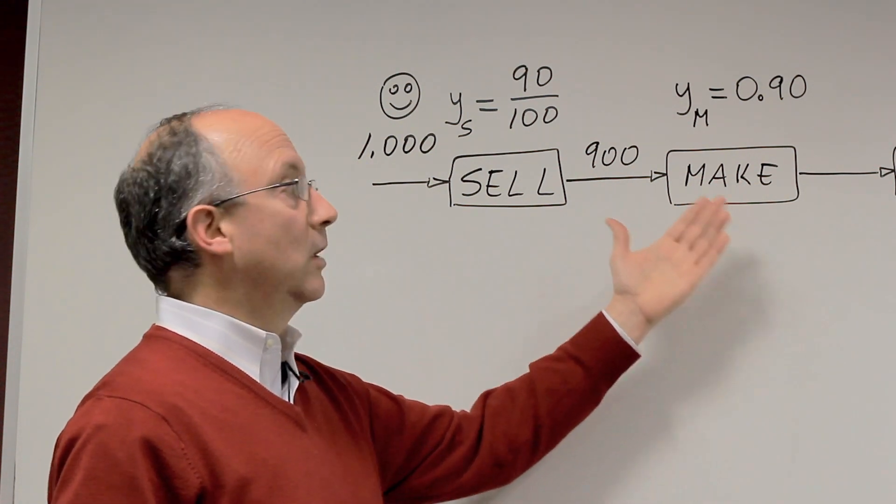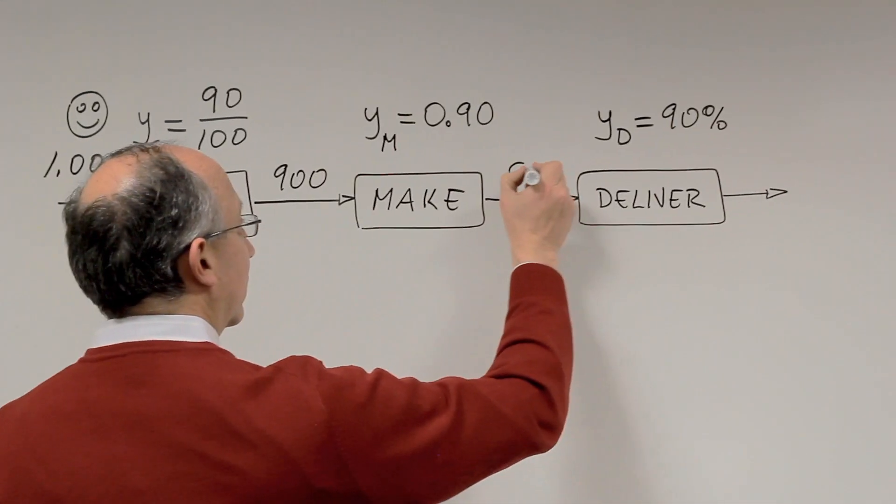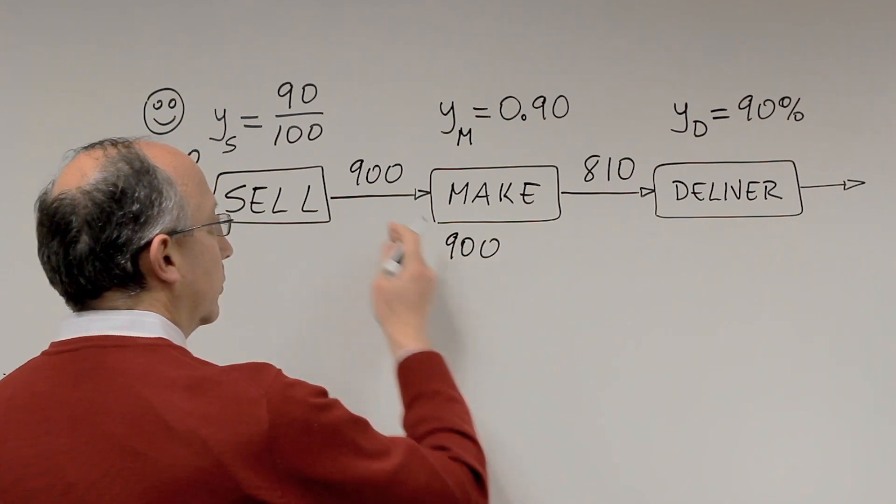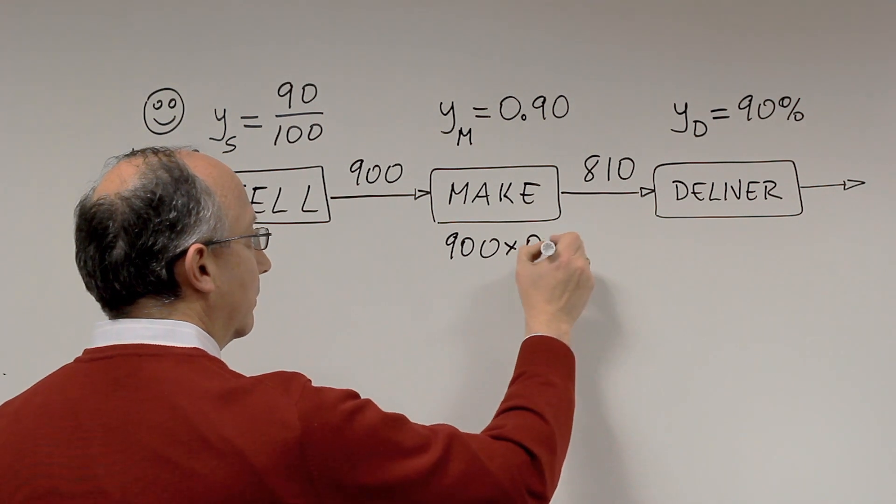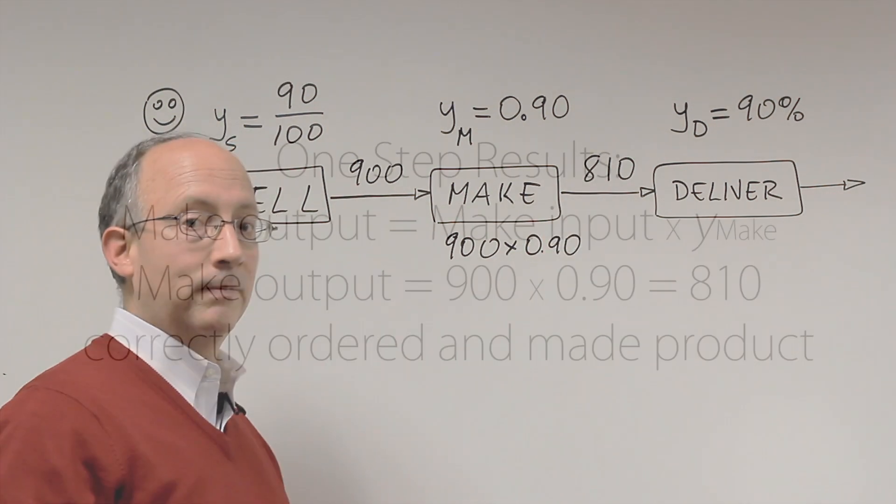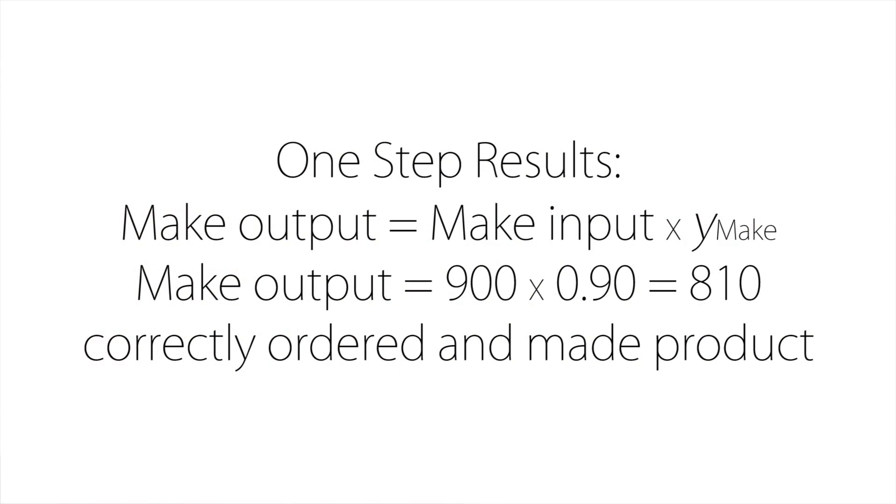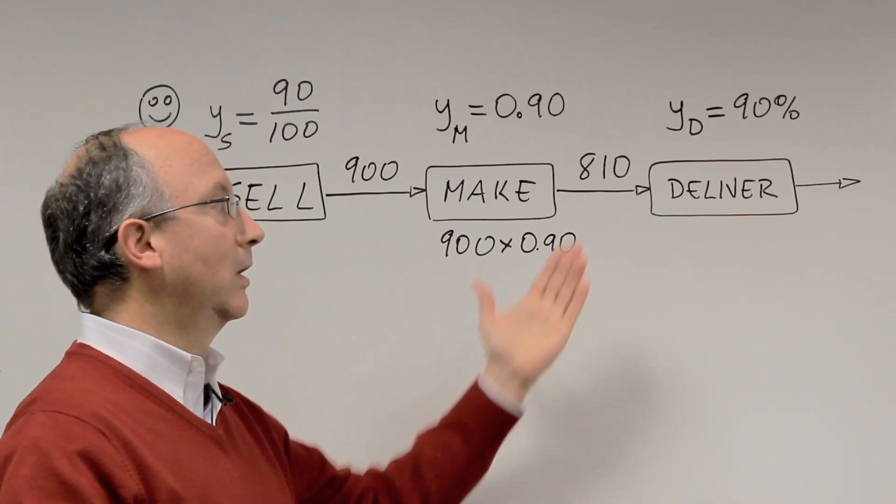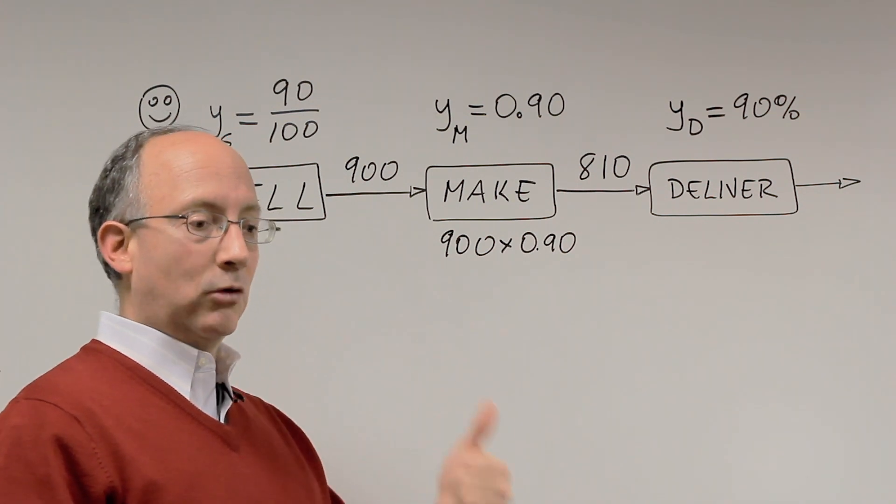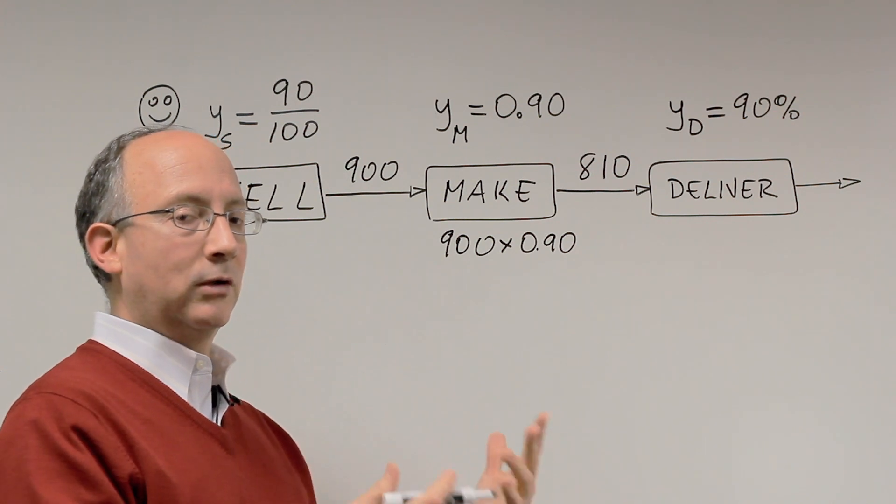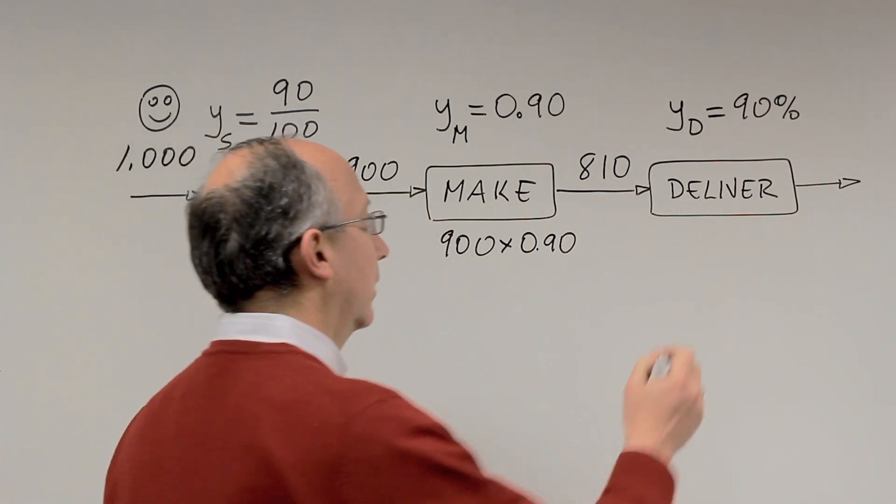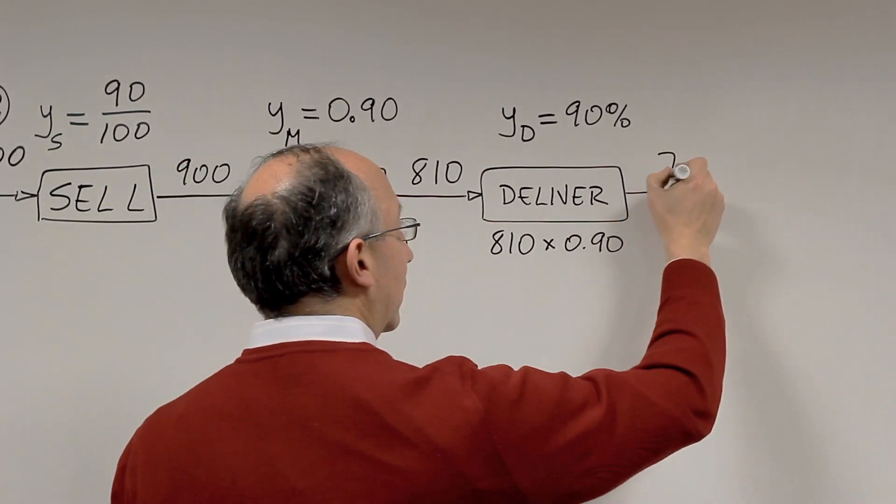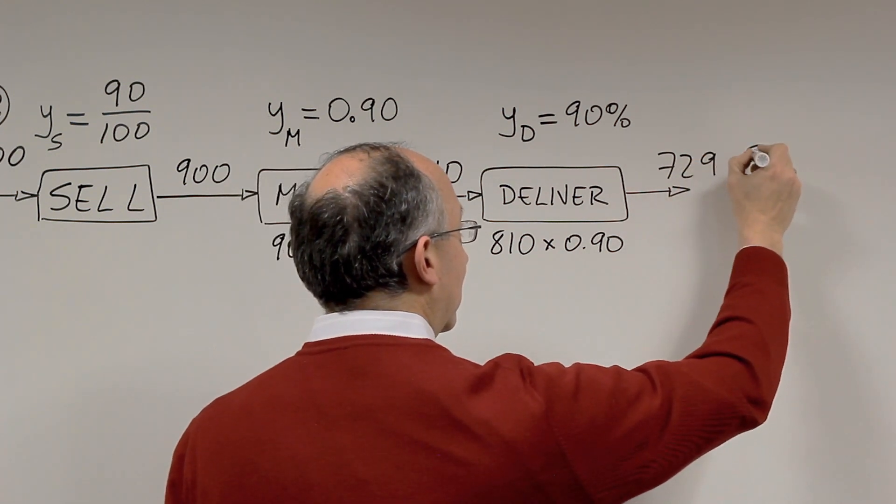Now the make function also has a 90% yield, which then would mean that 810 of these are perfectly made. Where does the 810 number come from? Well it comes from simply taking the original input, the 900 that come into make, and multiplying it by the yield. This multiplication produces the 810. Then what we have is that out of the original 1,000 we have 810 perfectly captured orders and perfectly made products, which is really what the customer wanted. Now the third step is to deliver those products. We would do the same calculation to determine how many perfectly ordered, made, and delivered products are actually the outcome at the end of all three steps. 810 would have to be multiplied by 90%, and this is going to give us a resulting total of 729 happy customers.